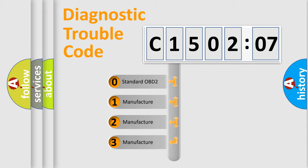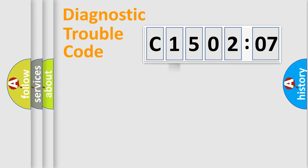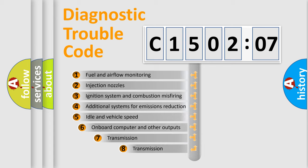If the second character is expressed as zero, it is a standardized error. In the case of numbers 1, 2, or 3, it is a more specific expression of the car-specific error.